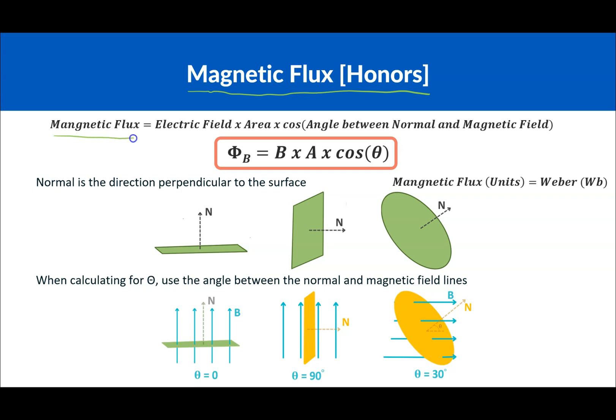So magnetic flux is going to be equal to the electric field times the area times cosine theta, the angle between the normal and magnetic field. So this is magnetic flux, this is the symbol for it, this is electric field, this is the area, and then it's cosine theta.